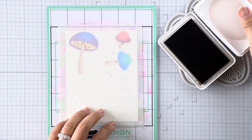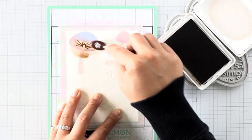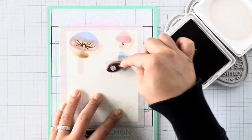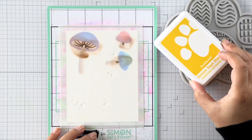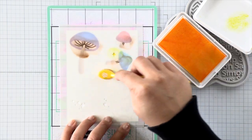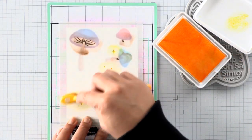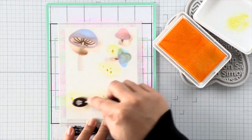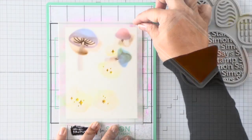The third layer for this stencil set adds details to the mushrooms. So I'm using some dark brown for that. And then on the stars and little sparkle elements for this stencil, I'm using yellow ink as well as some residual brown ink from my previous brush to give it a bit of contrast and a bit of highlight.